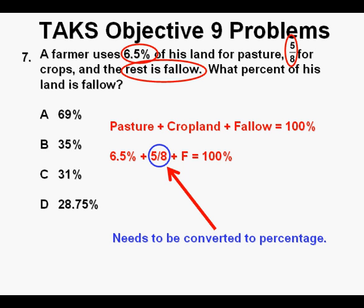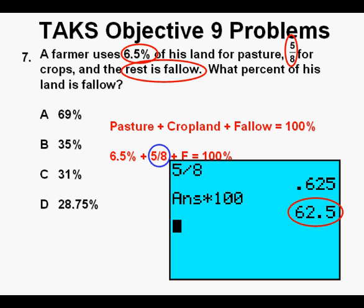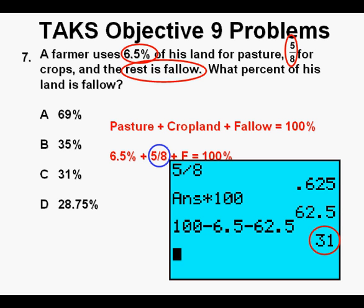To solve the problem, 5 eighths needs to be converted to a percentage. We divide 5 by 8, which equals 0.625, then multiply by 100 to get 62.5%. We can find the fallow land by taking 100% minus 6.5% minus 62.5%, which equals 31% that is fallow or not in use. We find 31% in the answer choices, so we circle our correct answer C.